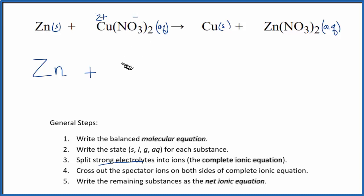When we split this up, we get Cu²⁺ (aq) plus NO3⁻ (aq), and we have two nitrates, so we put a coefficient of 2 in front.